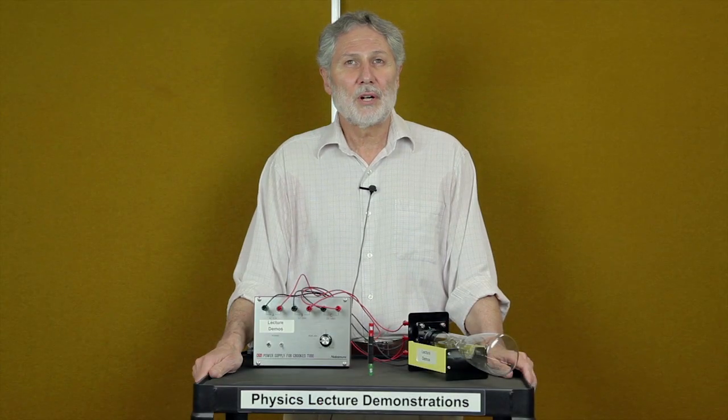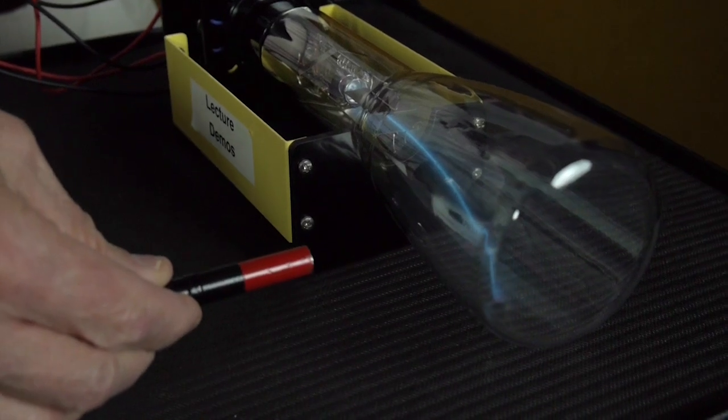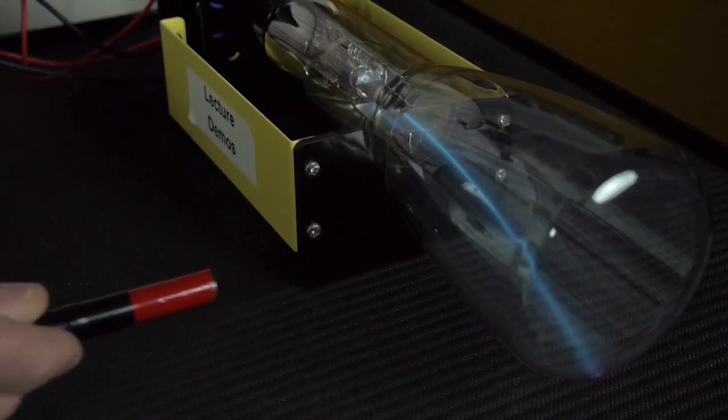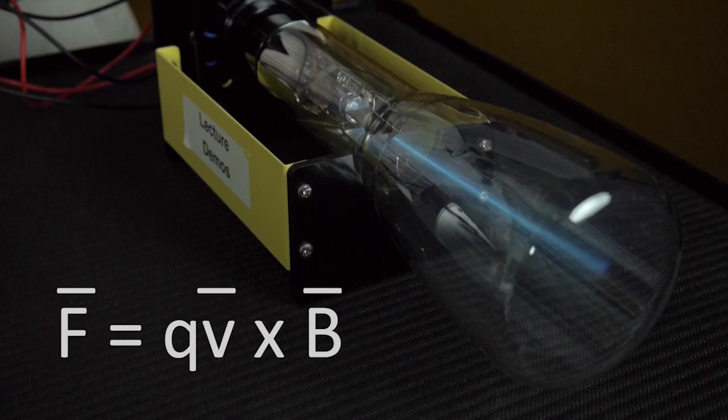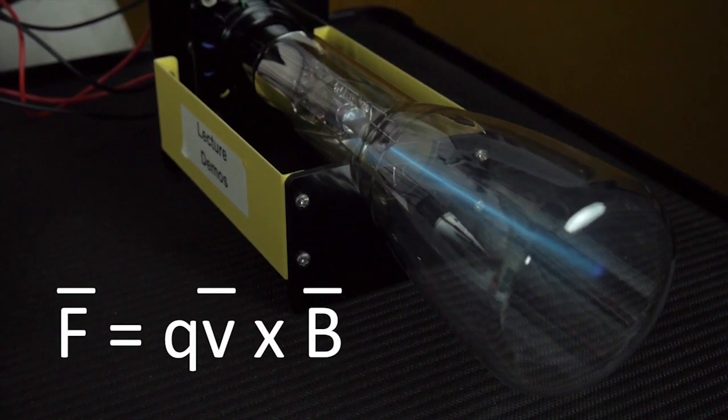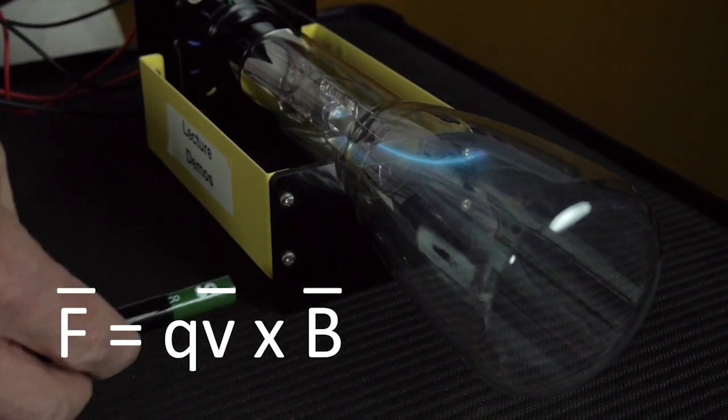A charged particle that is moving in a magnetic field can experience a force, which is the fundamental magnetic force. The force is given, in general, by the charge of the particle times the vector product of the particle's velocity and the magnetic field.